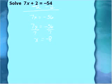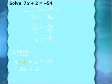I'm going to check this first problem. Whenever you do a solving equation problem, you want to check your answer to make sure that it's correct. We're going to take negative 8 and substitute it back into the equation for x, replacing x with negative 8: 7 times negative 8 plus 2 equal to negative 54. 7 times negative 8 is negative 56 plus 2, and negative 56 plus 2 is negative 54. So we know that this solution checks, and x equal to negative 8 is the correct answer.